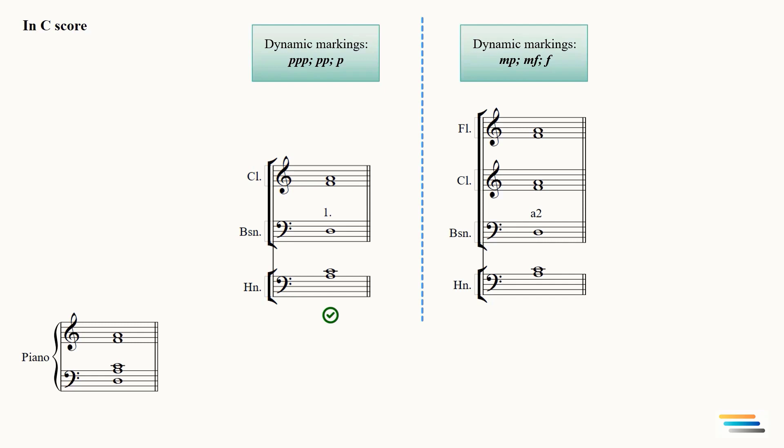So the lower D will be doubled by two bassoons. Two horns remain unchanged. The upper F and A will be doubled by two flutes. The same dynamic should be written below all instruments.